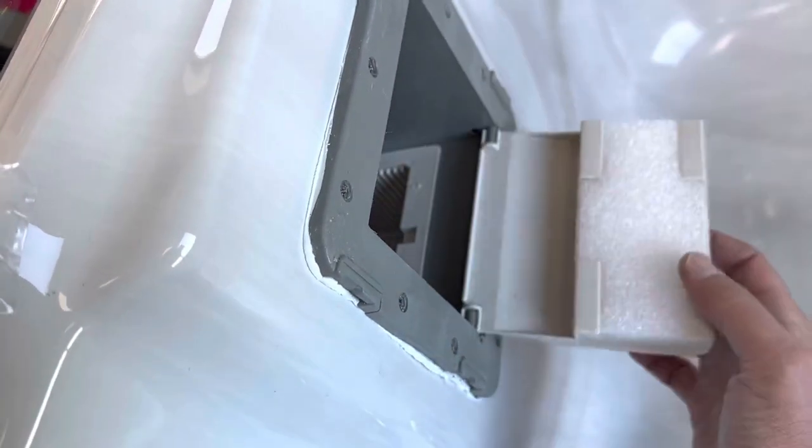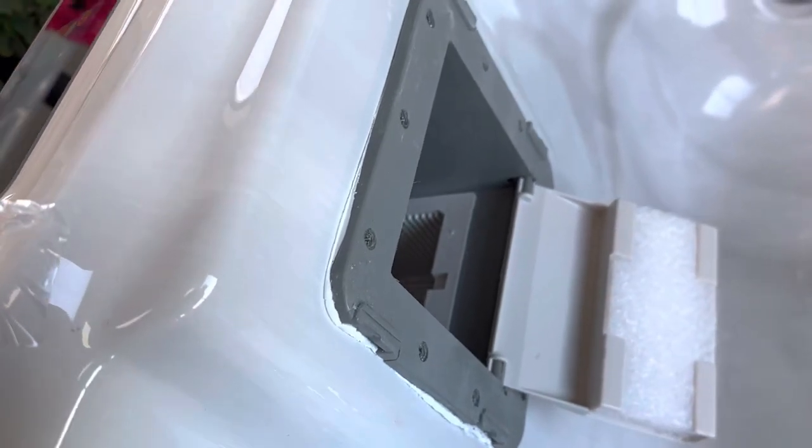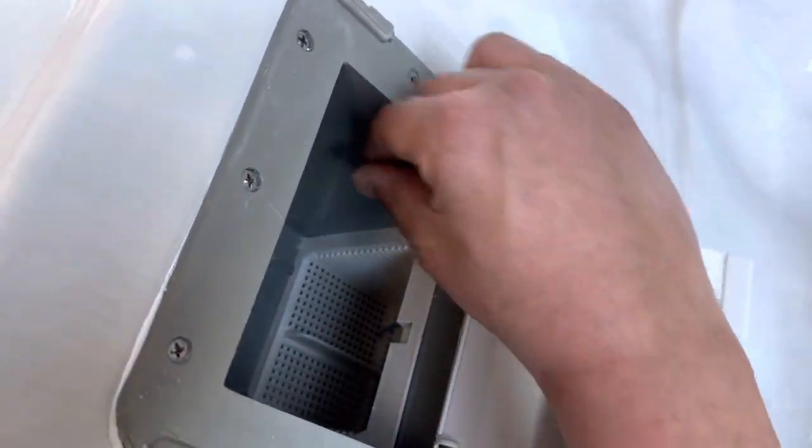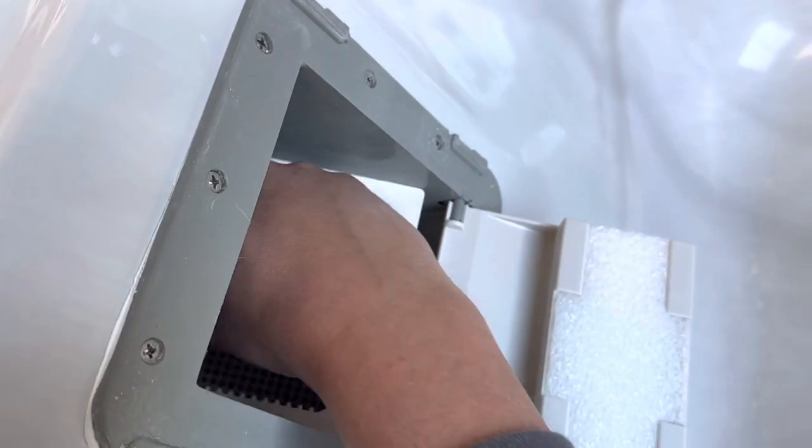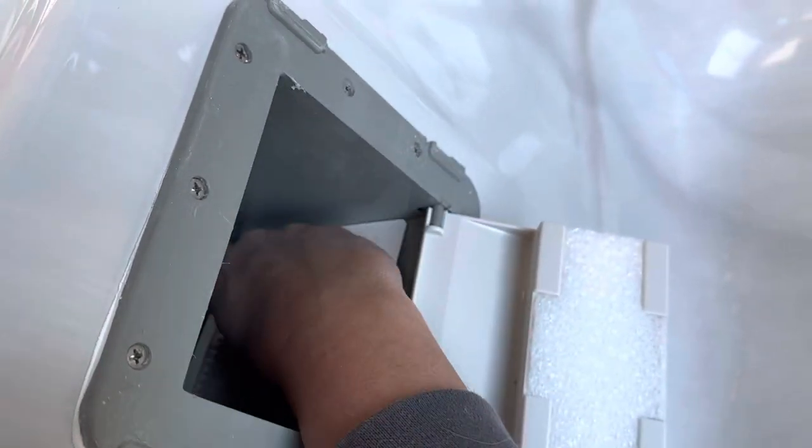Once you have that faceplate off, this is called a weir door and that will just slide open like that. And then you can see our basket in there. It's got a little handy tab here you can use to lift it out and it just pulls out like this.